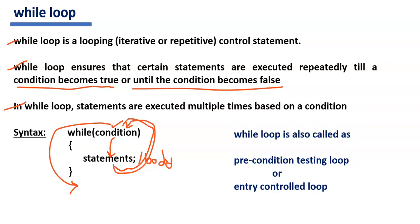While loop is also called as a precondition testing loop or entry controlled loop. Because initially, to enter into the while loop, the condition is checked first. If the condition is true, then only we can enter into the while loop. That is why it is called a precondition testing loop — the condition is checked initially. It is also called an entry controlled loop because, in order to get entry into the while loop, the condition must be satisfied first.